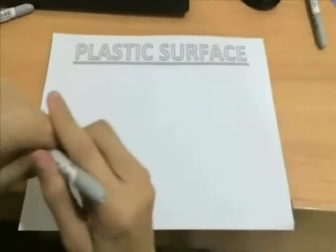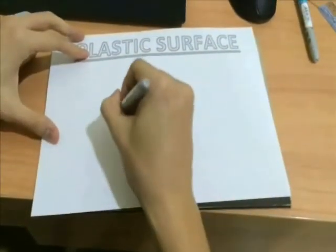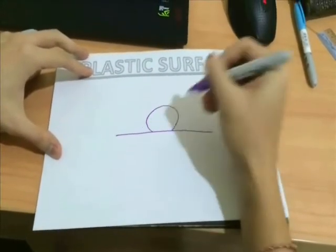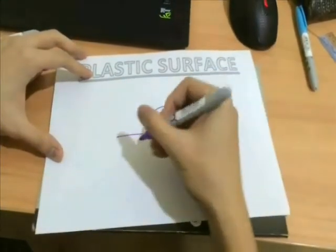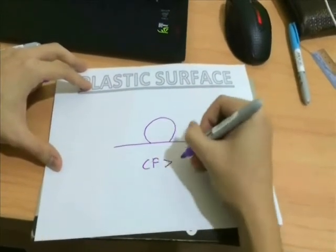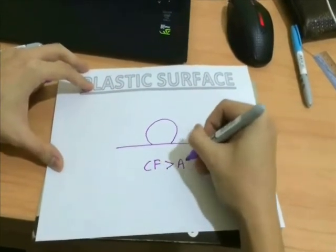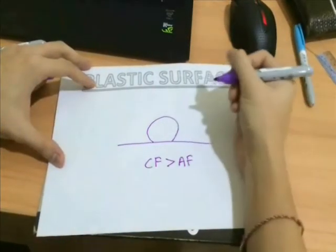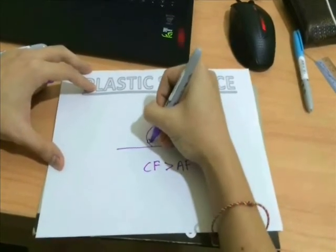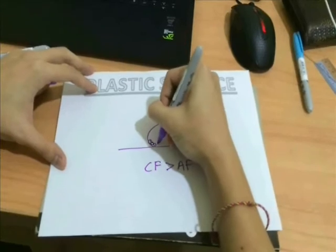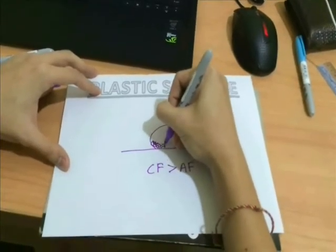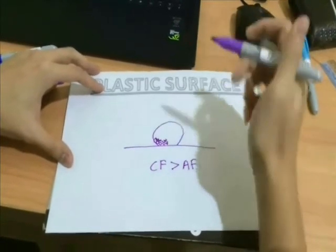So, why did this happen? When a drop of water is placed on the plastic surface, which is made up of non-polar groups, the cohesive forces among the water molecules are stronger than the adhesive forces between the water molecules and the plastic molecules. The water will resist separation and cause the water to retain a spherical shape and bead up on the surface.